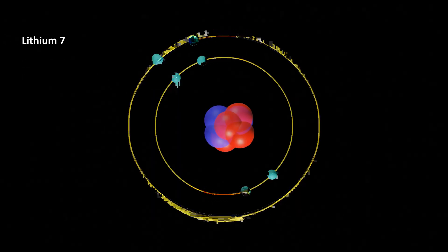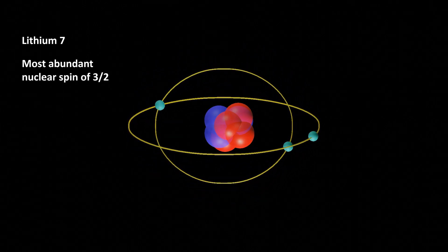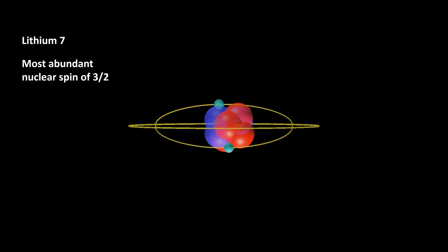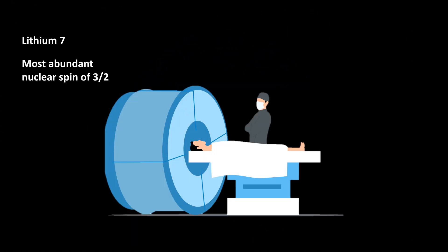Lithium-7 is the most abundant isotope and makes up about 92.5% of naturally occurring lithium. It has a nuclear spin of three halves and is used in nuclear magnetic resonance imaging and in the production of tritium, a radioactive isotope of hydrogen.